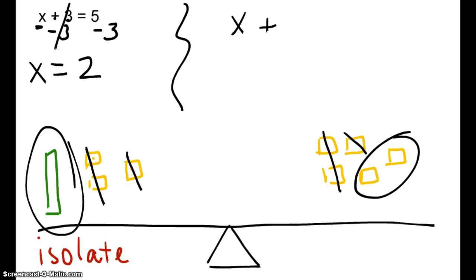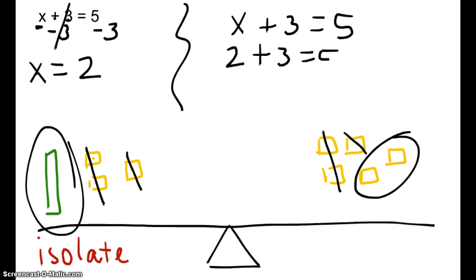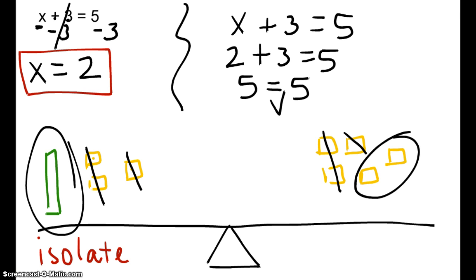After you do that, I want you to rewrite your equation and then substitute in the value for x. So instead of x plus 3, we're going to put 2 plus 3 equals 5. Well, 2 plus 3 is 5. Does that have the same weight as 5? Yes. So is x for sure equal to 2? Yes, it is.